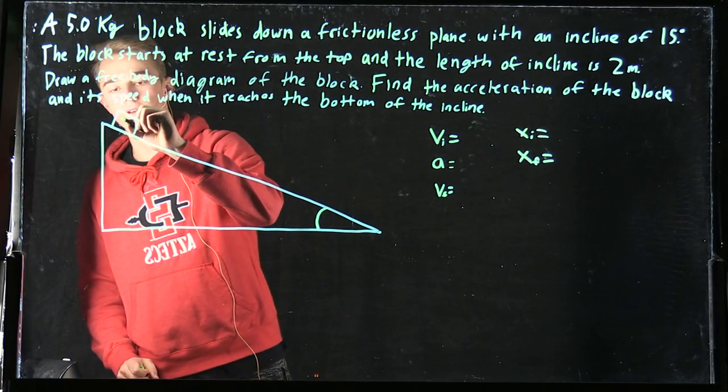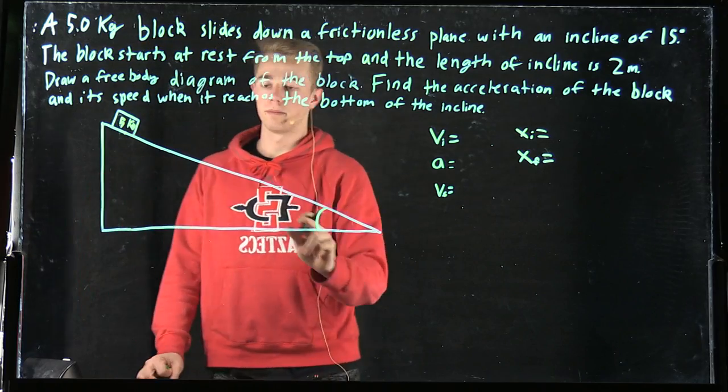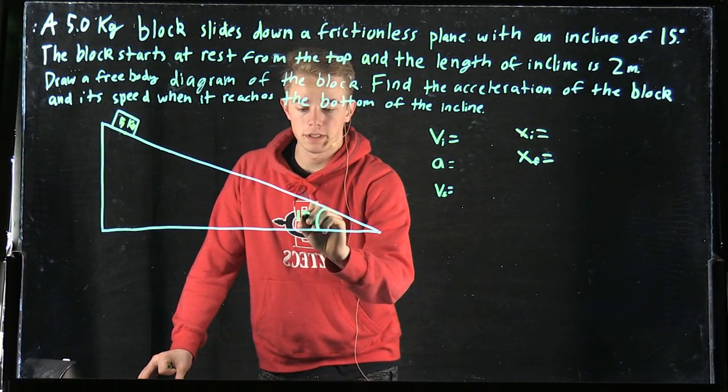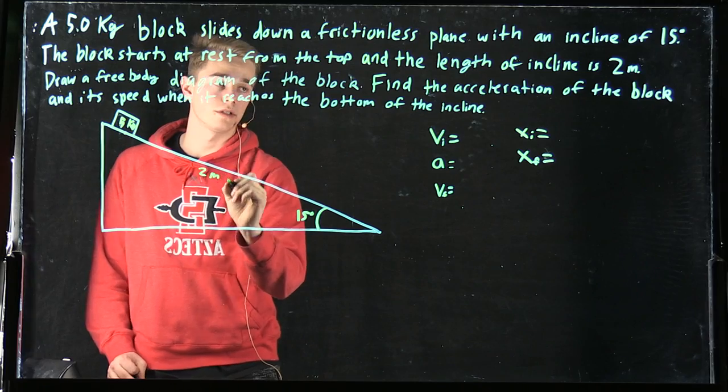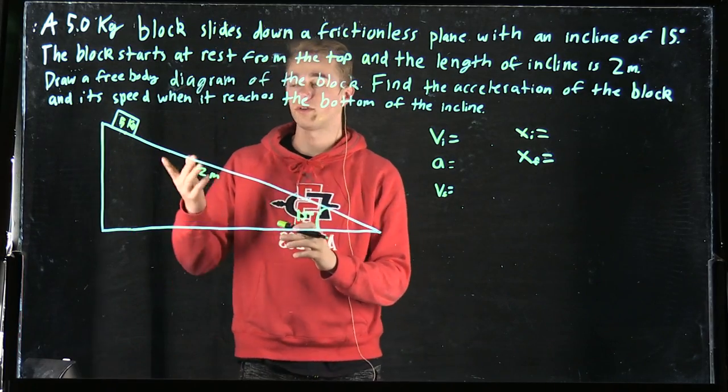So we have the 5 kg block sliding down the plane that's at 15 degrees, and the length of that plane is 2 meters. Now for the free body diagram...